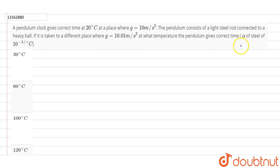The coefficient of linear expansion for steel is 10 to the power minus 5 per degree Celsius. Now we know that for a pendulum clock, the time period we can write as T equals 2 pi under root of l by g.